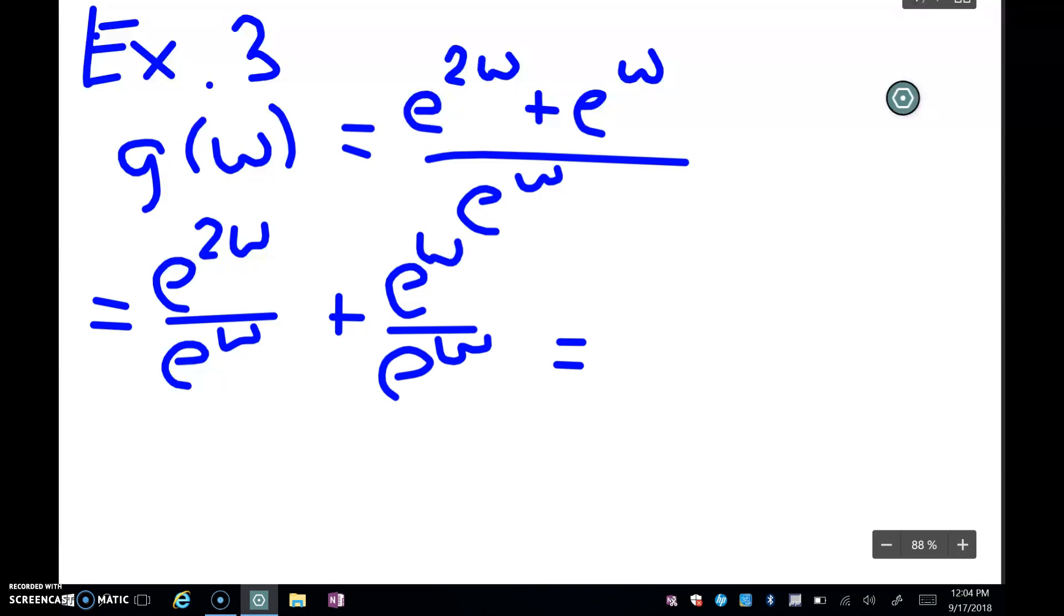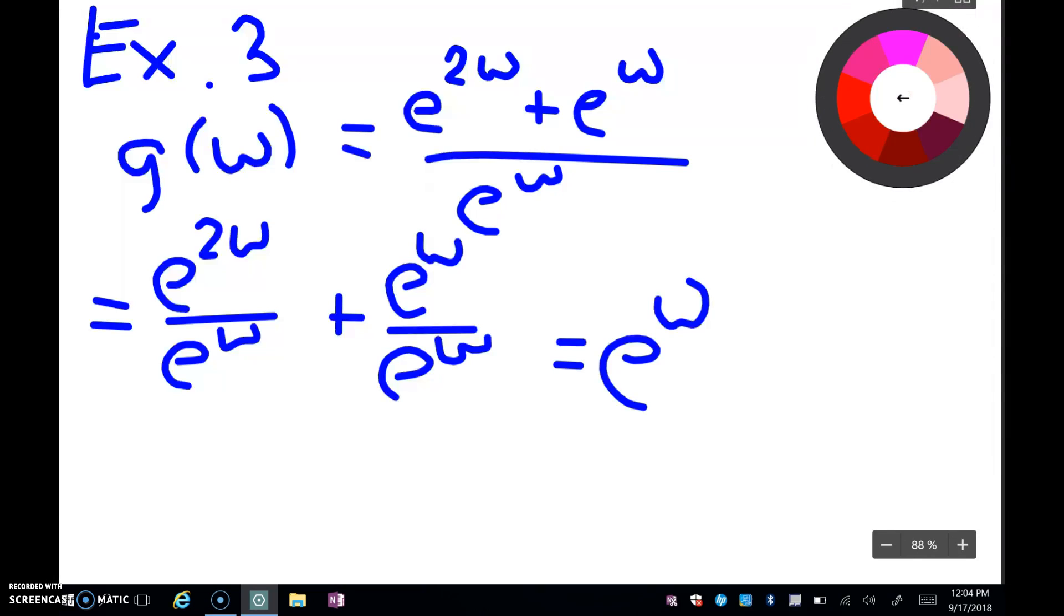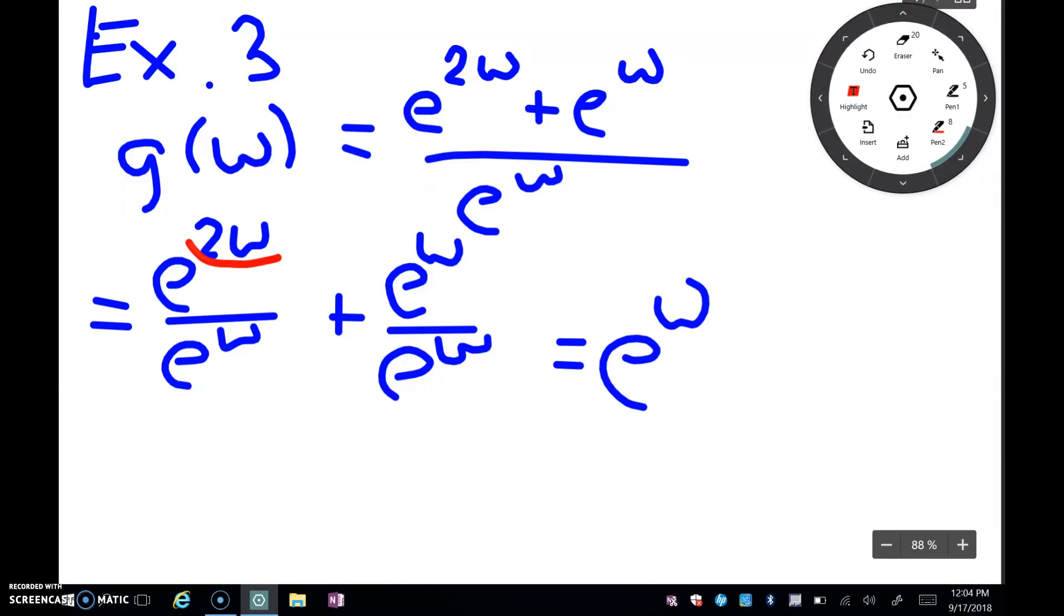And that simplifies to e^w because, remember, you're subtracting your exponents here. So let's see if I change color. So I'm taking these exponents and I'm subtracting them. So 2w minus w is w, okay?